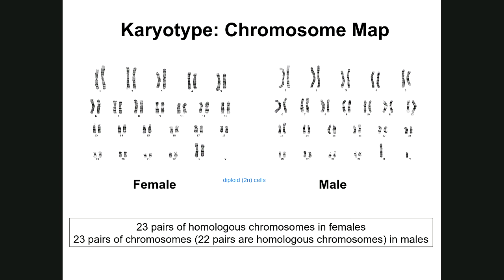Diploid somatic cells have a total of 46 chromosomes that can be paired up based on homology. When a karyotype is created, the 46 chromosomes can be paired into 23 pairs. The first 22 pairs are called homologous chromosomes — or autosomes. They're not all the same in size, so on a karyotype they're arranged in descending order, with chromosome pair number 1 being the longest and most structurally similar, all the way down to chromosome pair 22.